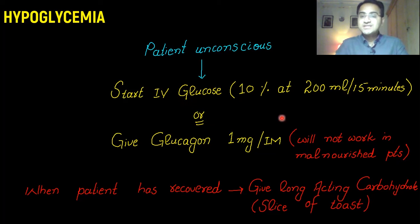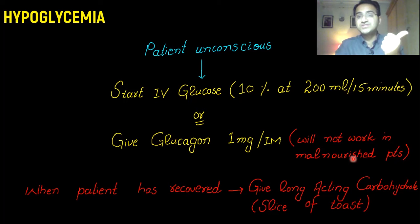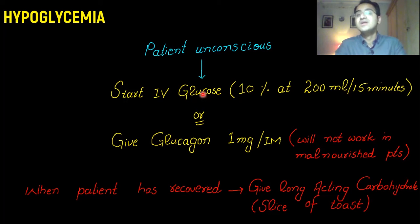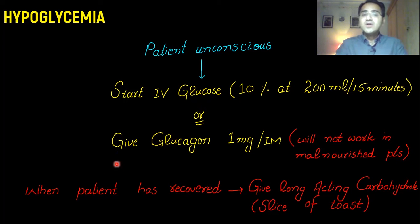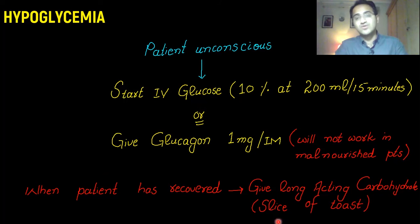Patients who are alcoholic are usually also malnourished, and chronic alcoholics often present to hospitals with hypoglycemia. In those patients you give IV glucose, but always give thiamine with glucose to prevent cerebral edema. Once the patient has recovered, you give a long-acting carbohydrate snack like a slice of toast.